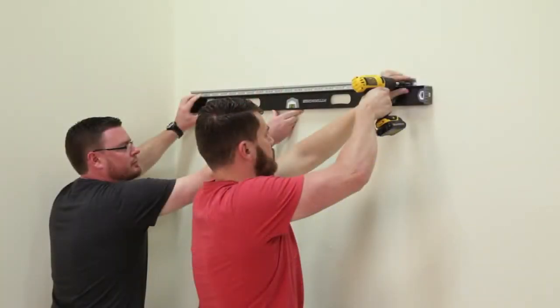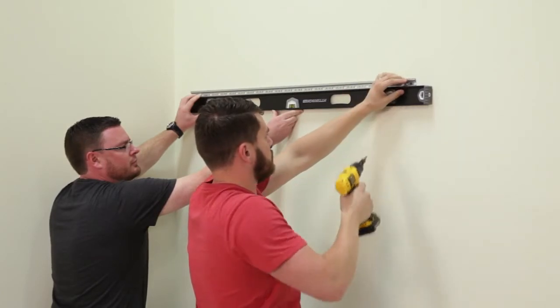Next, simply level and attach the rail to the wall, making certain it is securely fastened with appropriate fasteners to the wall structure.